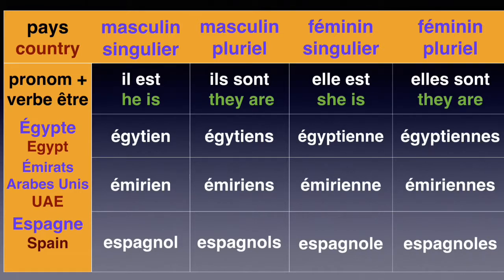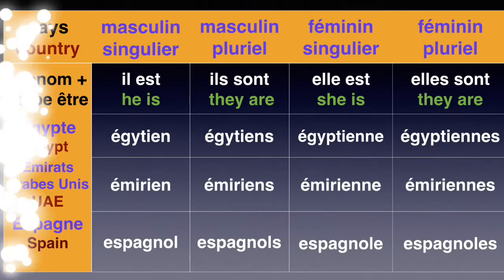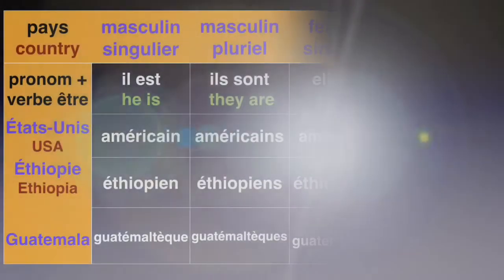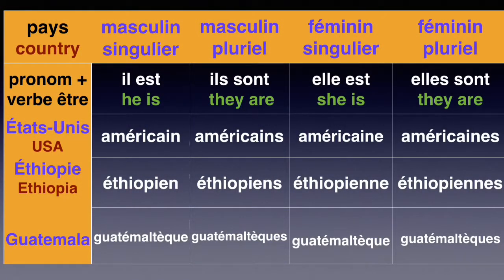Il est éthiopien — elle est éthiopienne, double N, E to make it feminine. Il est espagnol, he is Spanish. Elle est espagnole, we add the E to show it is feminine. Il est américain, he is American. Elle est américaine, we add the E to show it's feminine. Il est guatémaltèque, he is Guatemalan. Elle est guatémaltèque — both are the same spelling.